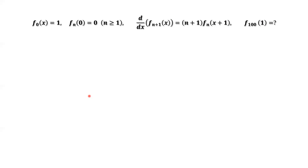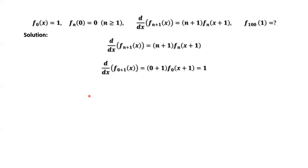Let's try a few values to find out f1 of x, f2 of x, and f3 of x. This is the given condition. Let n equals 0. Here, f0 of x plus 1 equals 1. Why? From the first given condition, f0 of x equals 1 for any x.